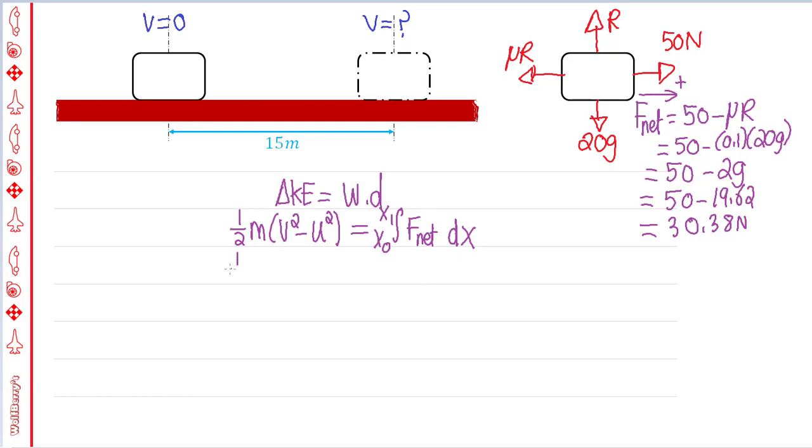So let's substitute into our work energy principle. So half, the mass is 20. We're looking for v squared, so we leave it as v minus 0 squared, the initial speed is 0, equals the integration. Now our upper limit is going to be 15, because that's the maximum distance. Lower limit is 0. The net force is 30.38 dx. We just found it. Remember, we haven't integrated yet. Let's simplify the left side. Half times 20 is 10. 0 is going to be 0. So we're going to have 10 v squared is equal to, when you integrate a constant, it becomes 30.38. We're integrating with respect to x, so 30.38 x between 15 and 0.